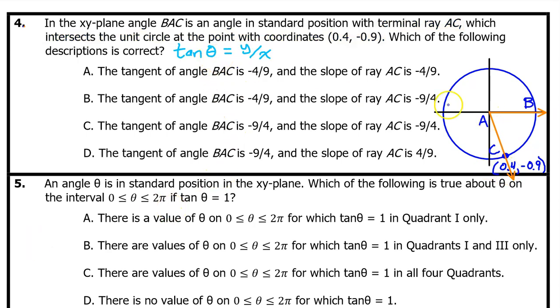Hopefully you have memorized that if the terminal ray passes through the point (x, y), the tangent of the angle is y over x. So in this case, the tangent of, and I'm just going to call this angle θ, the tangent of angle θ is negative 0.9 over 0.4. We have also learned that the tangent is the slope of the terminal side. So this must equal the slope of the terminal side AC.